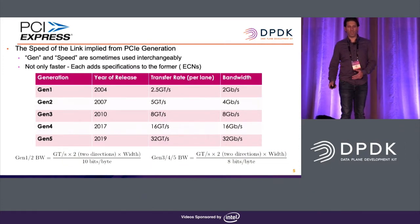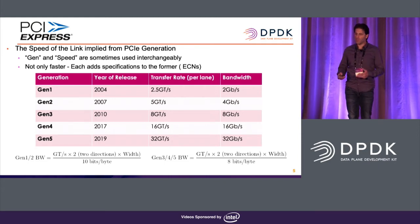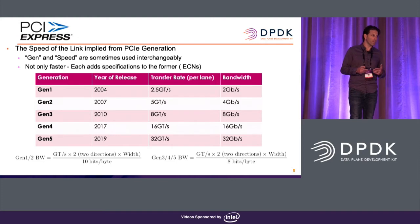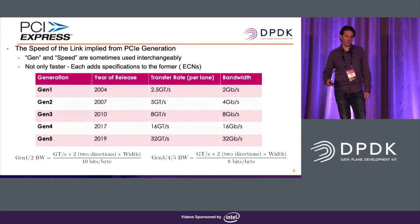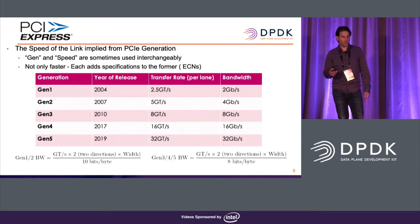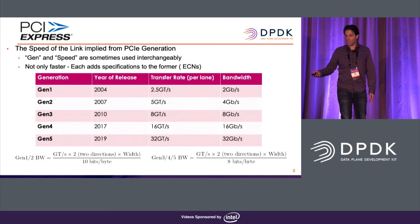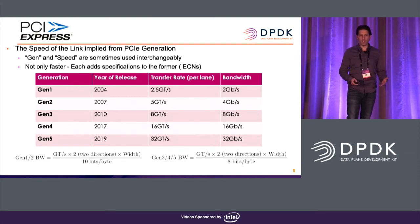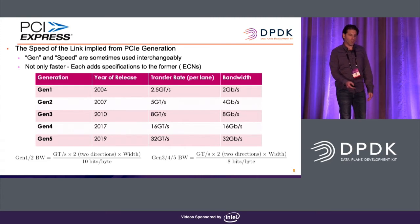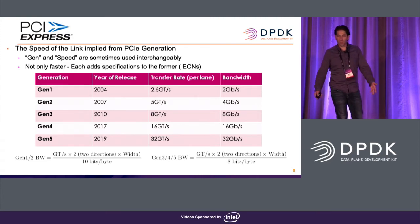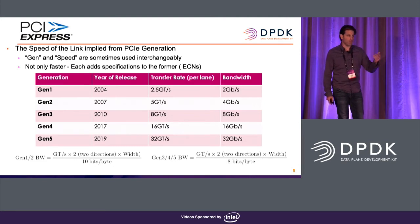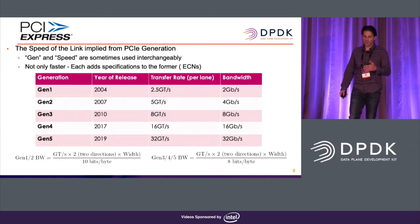Generations and speed are sometimes used interchangeably, but each generation also brings new features. PCIe speed doubled from Gen 1 to Gen 2. From Gen 2 to Gen 3, the physical wire speed didn't double — it went from 5 to 8 GT/s — but effective bandwidth doubled due to improved encoding: 8 bits per byte instead of 10. The Gen 4 spec arrived in 2017, and Gen 5 is already out with products expected in the next year or two.